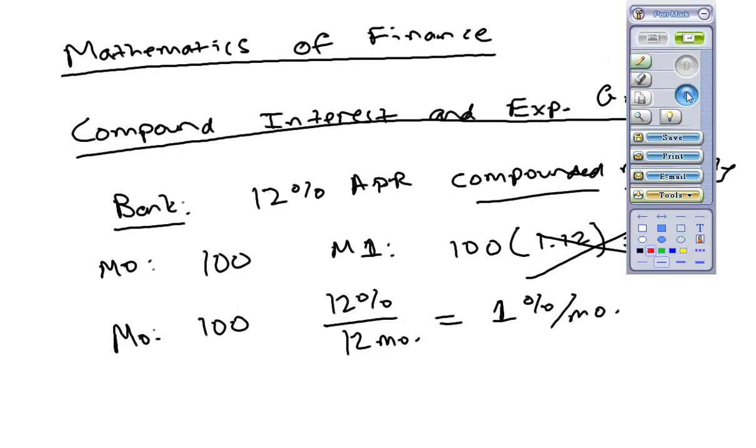So that's where we see the compound interest formula, which says that the future value, sometimes we write that as A, or the accumulated amount, is equal to the present value, or the principle, times 1 plus the rate divided by n.